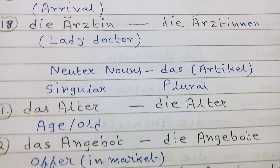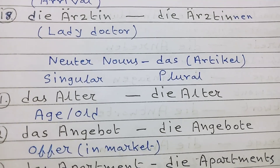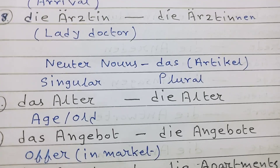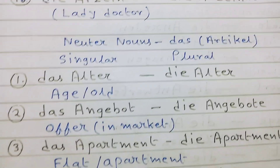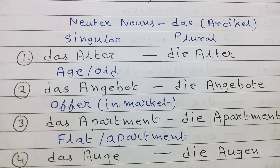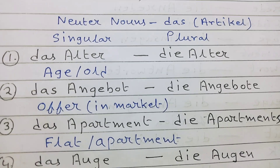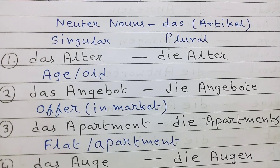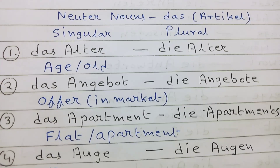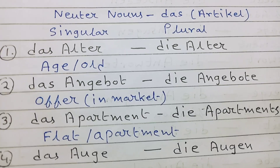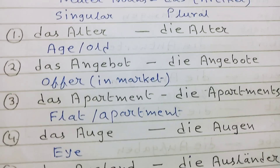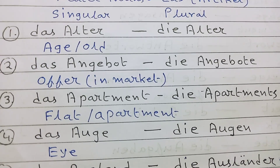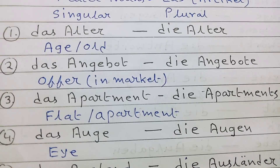Now here are neuter nouns. The article is das, singular and plural. Number 1: das Alter, die Alter — age. Number 2: das Angebot, die Angebote — offer, generally in market.